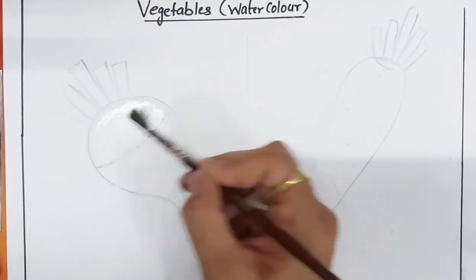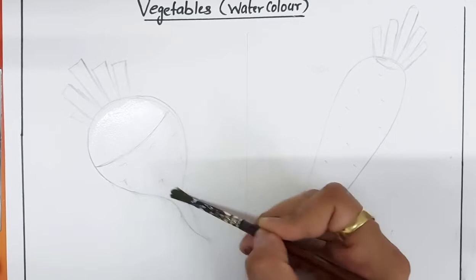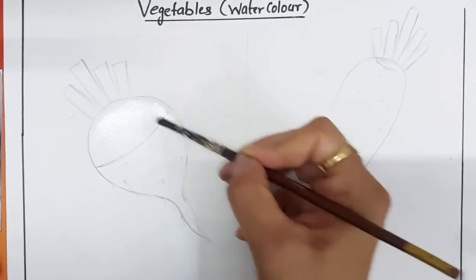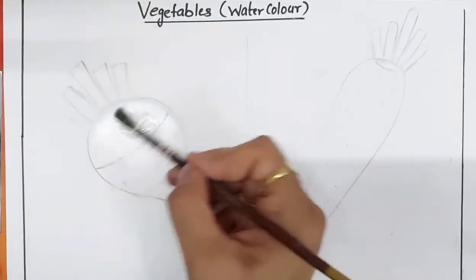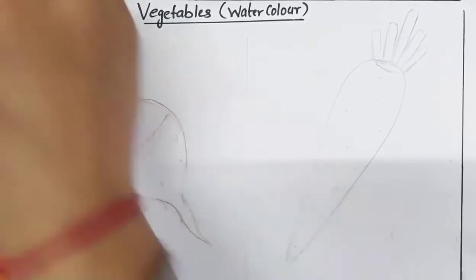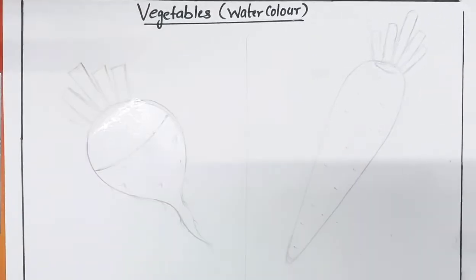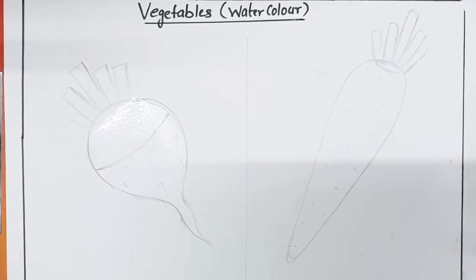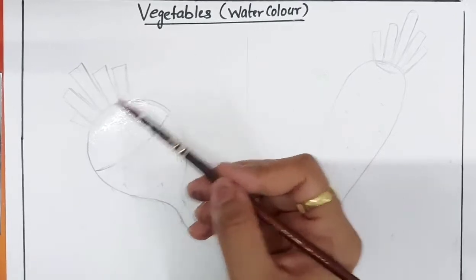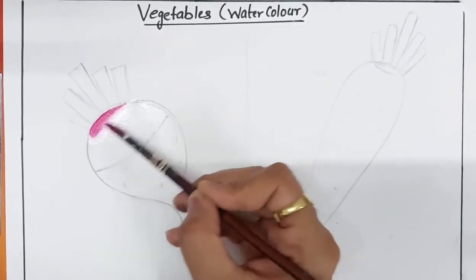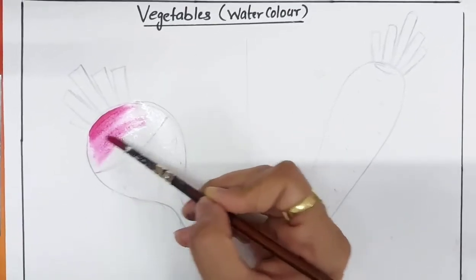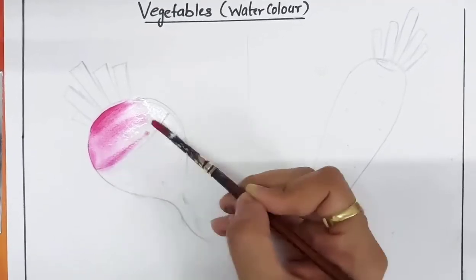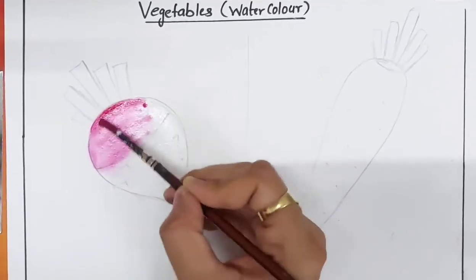Now wet the entire turnip by using clean water. Now add a little bit of dark pink color on the top and spread like this.